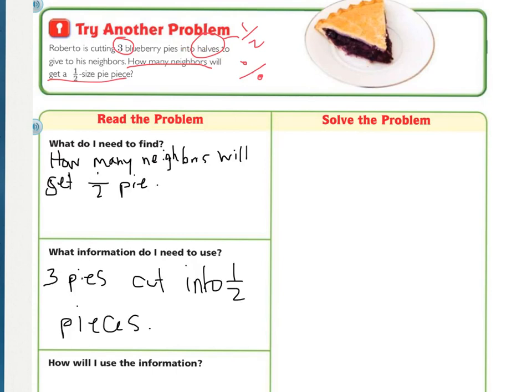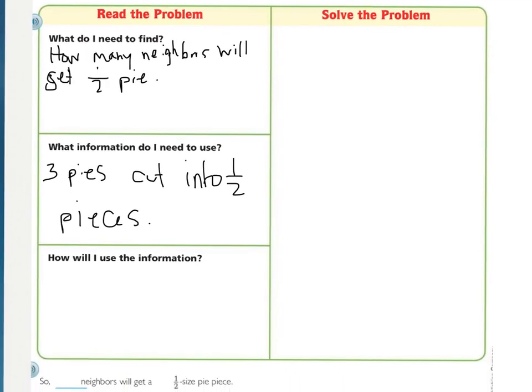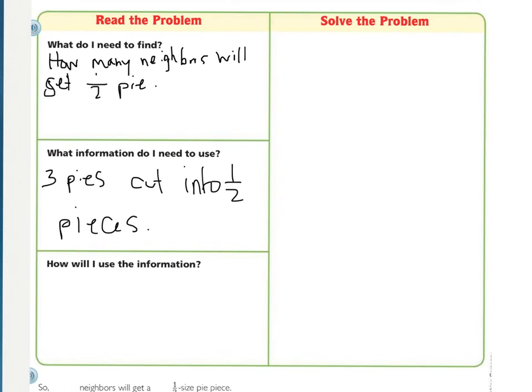So I wrote my information of what I need to find and what I need to use. How many neighbors will get a half a piece, half a pie? That would just be the same as finding how many halves are in three. Now looking down at our bottom, how are we going to use this information? Our strategy today is we are going to draw a diagram.